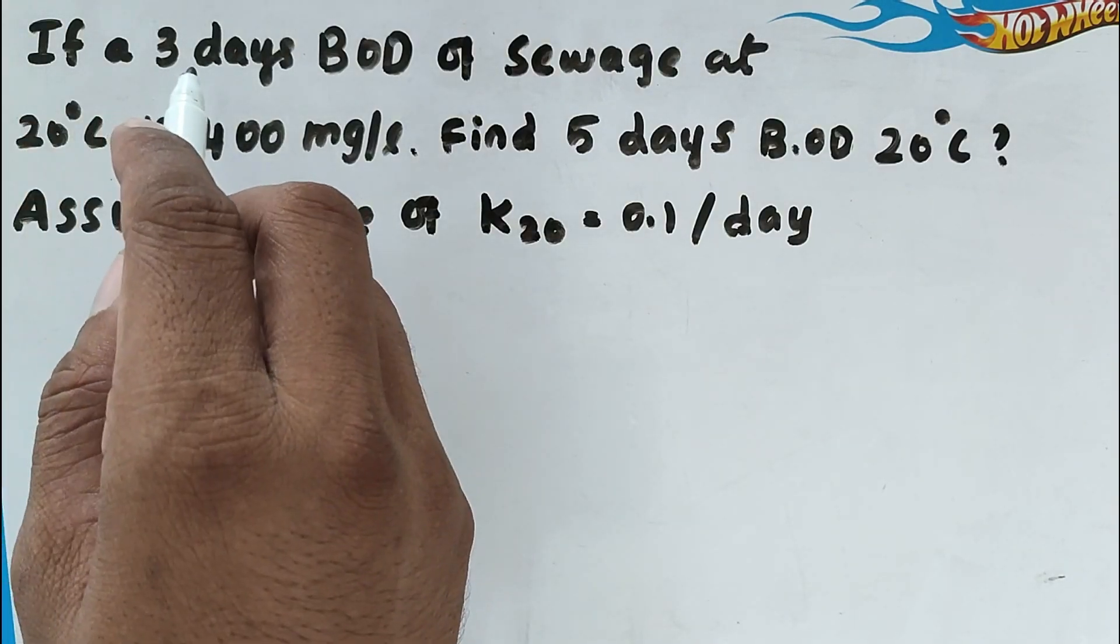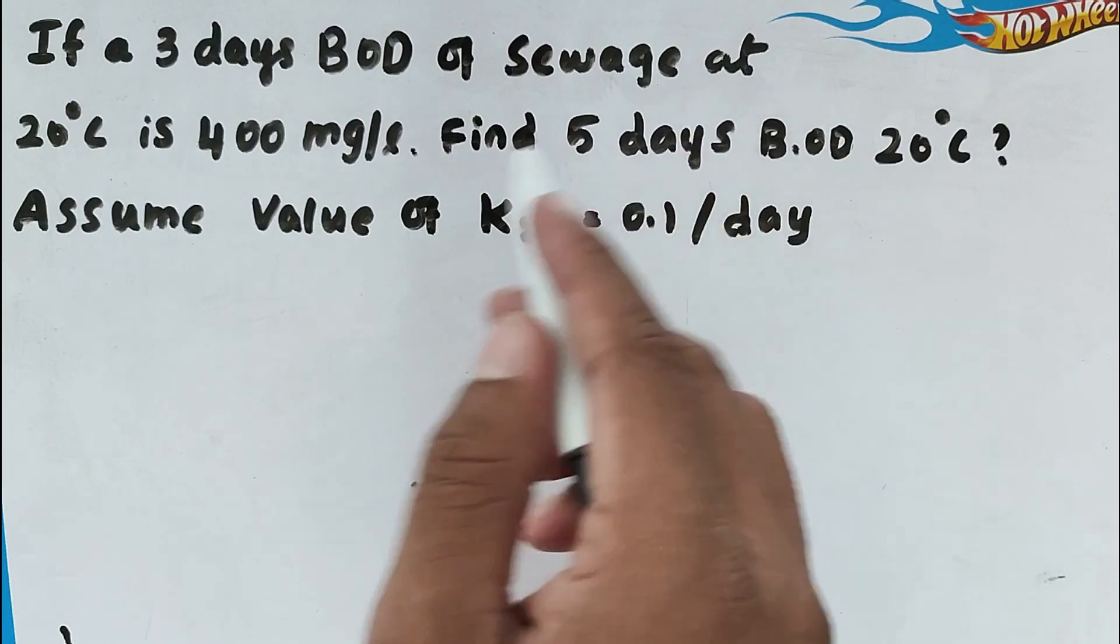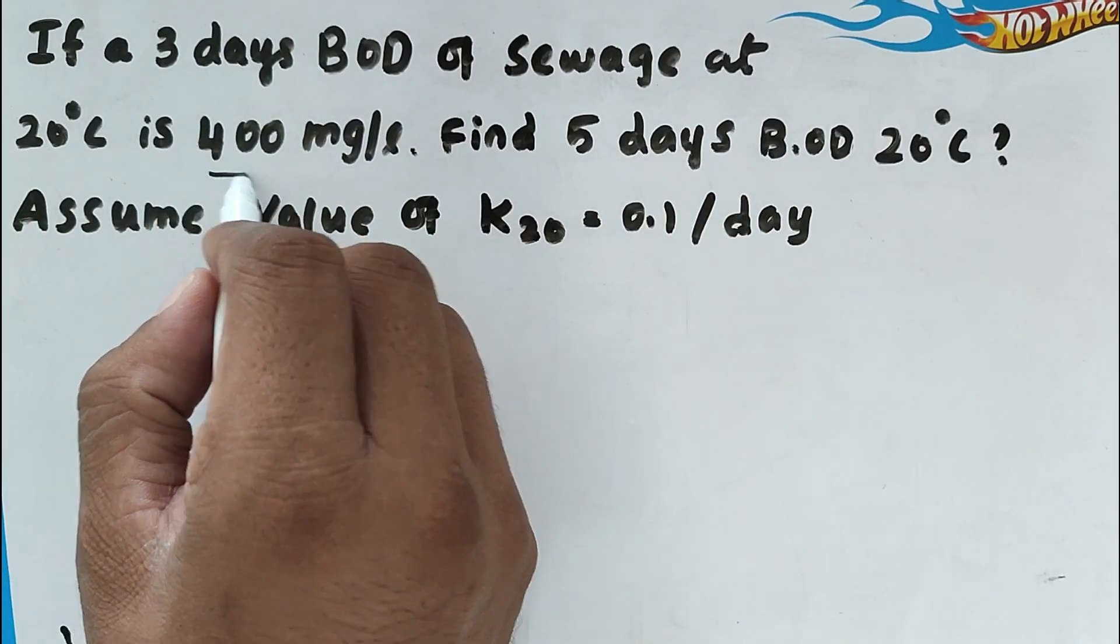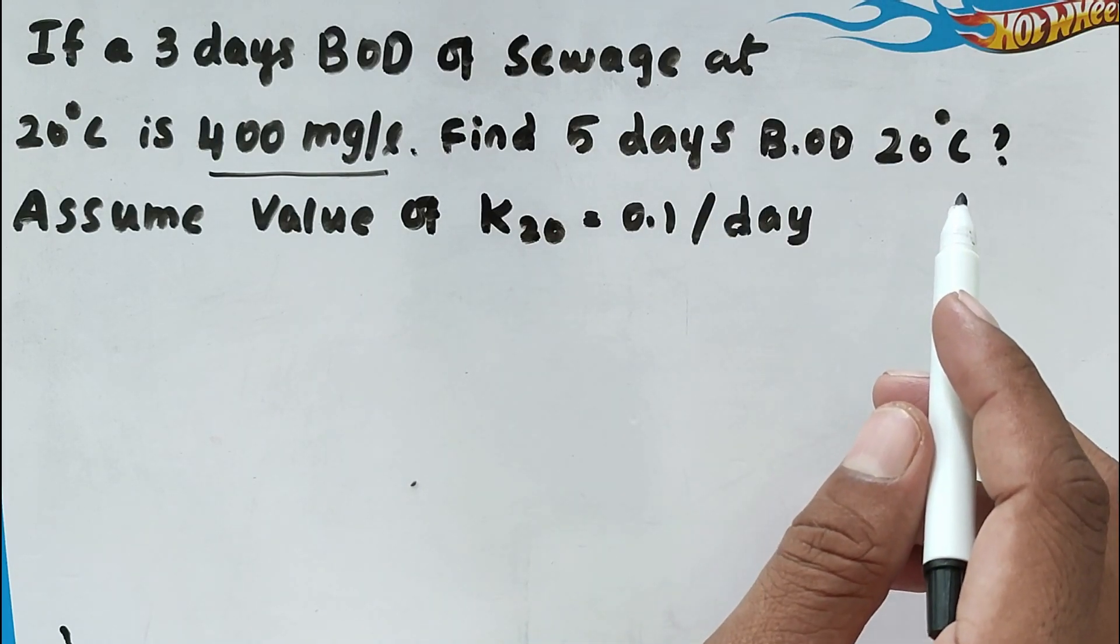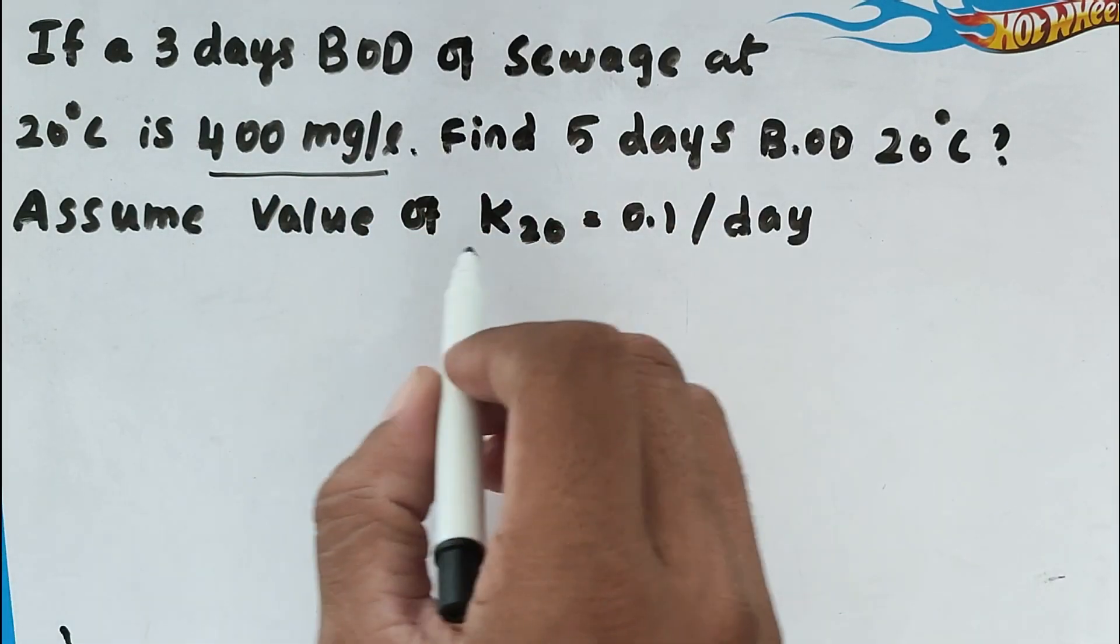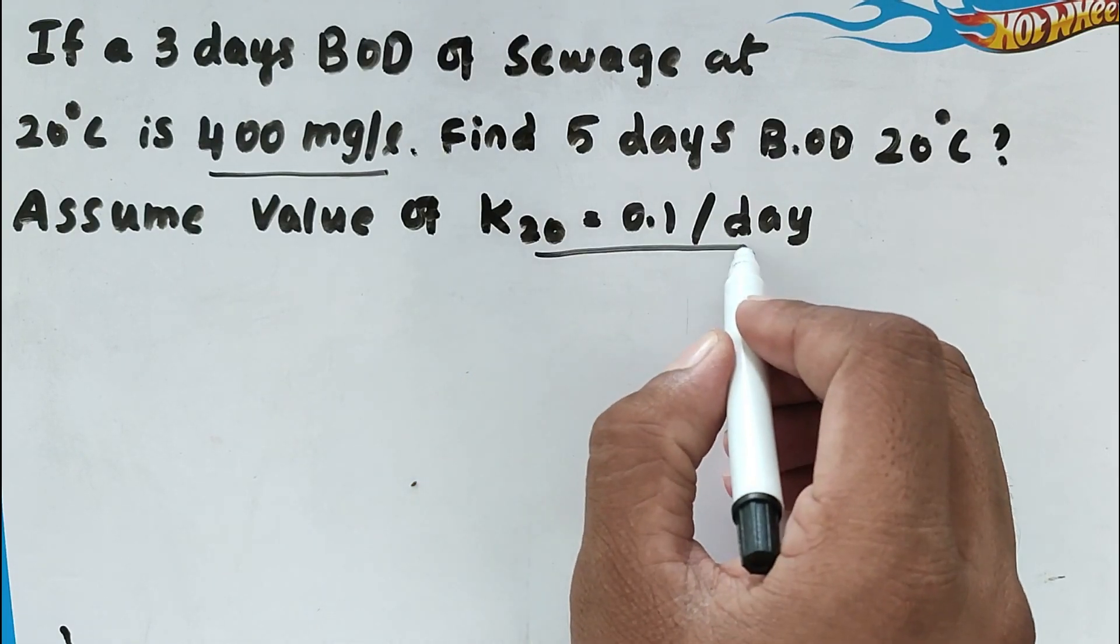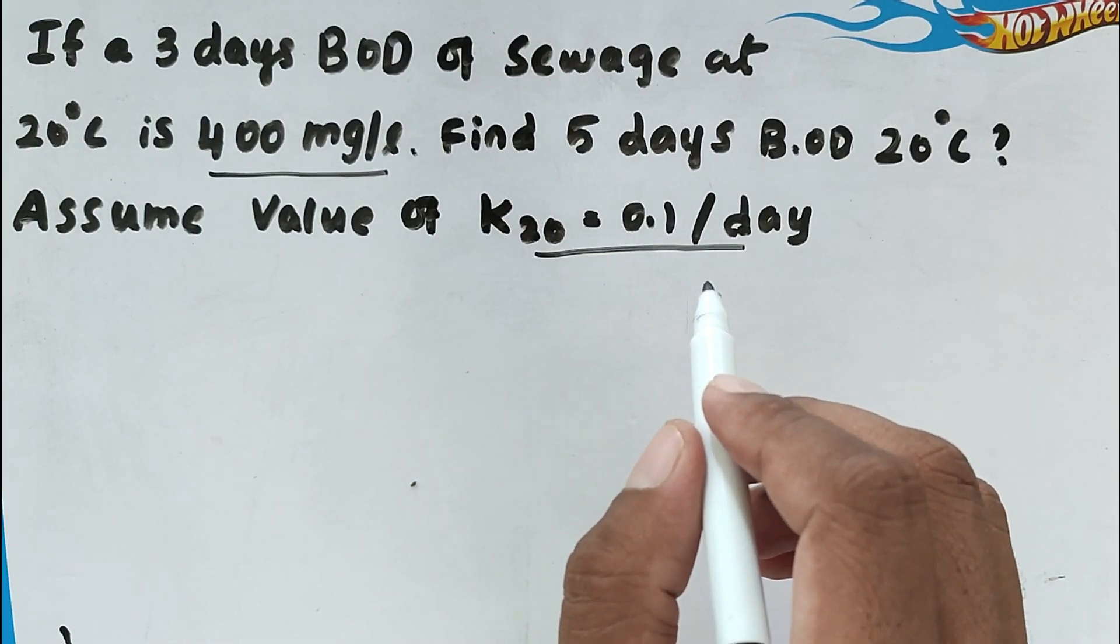So the problem is, if a 3 days BOD of sewage at 20 degree Celsius is 400 milligram per liter, find 5 days BOD at 20 degree Celsius in the same sample. Assume the value of K20 is 0.1 per day.